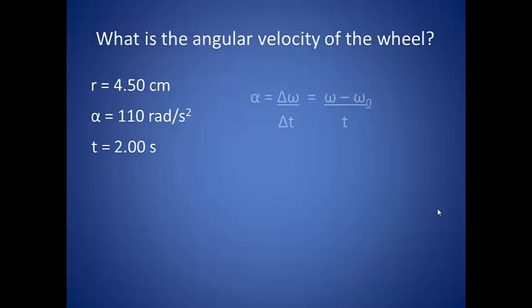We know that angular acceleration is equal to the change in the angular velocity over time, and that delta omega is the same as the final angular velocity minus the initial angular velocity. Again with the algebra, we can solve for our final angular velocity.